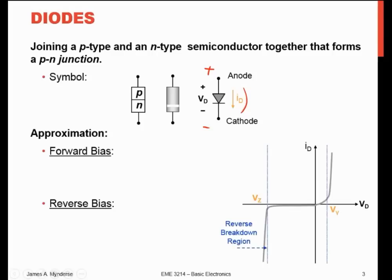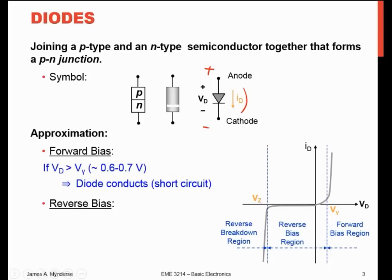Here's the graph. If we're forward biased and the voltage across the diode is greater than the forward bias voltage — about 0.6 to 0.7 volts — this is voltage on the x-axis and current on the y-axis. As long as I'm above that threshold, current will start flowing and go up with very little change in voltage across it. So I almost have a constant voltage drop across it, independent of the current. That 0.6 to 0.7 is for silicon. Germanium diodes can be built with a threshold of 0.3 volts. Schottky diodes can get down to about 0.1 to 0.2 volts.